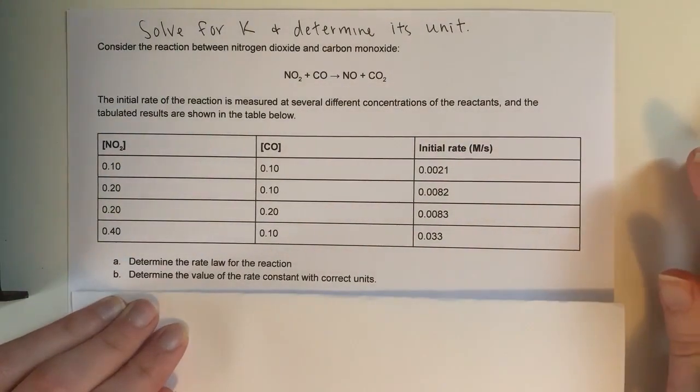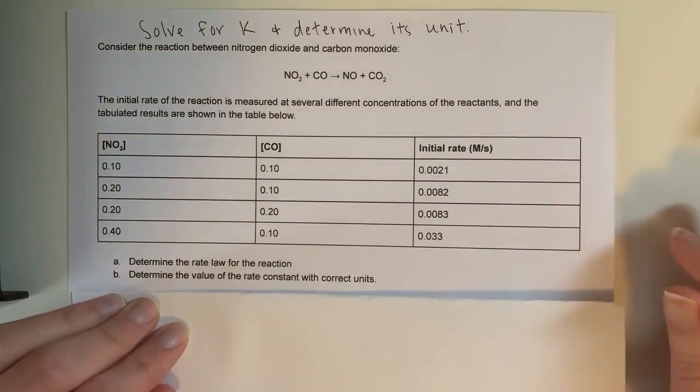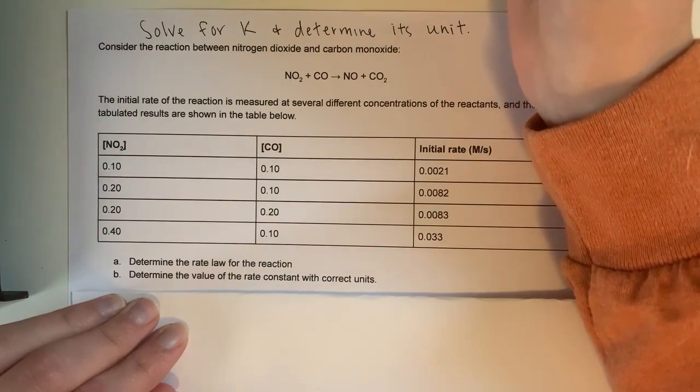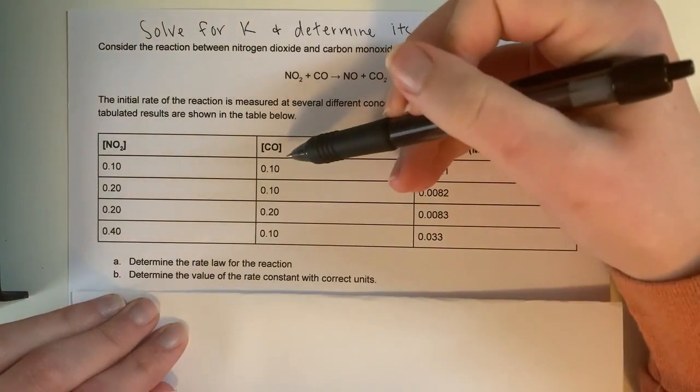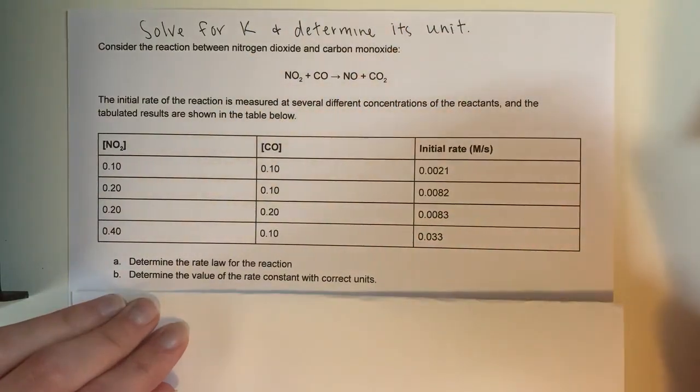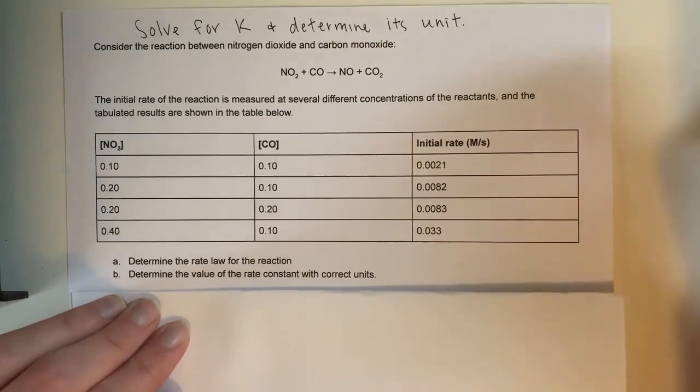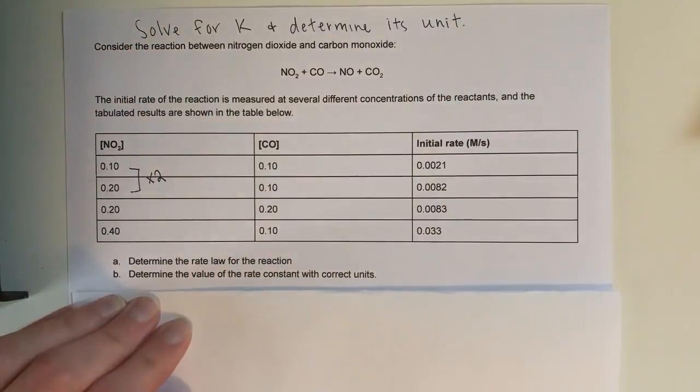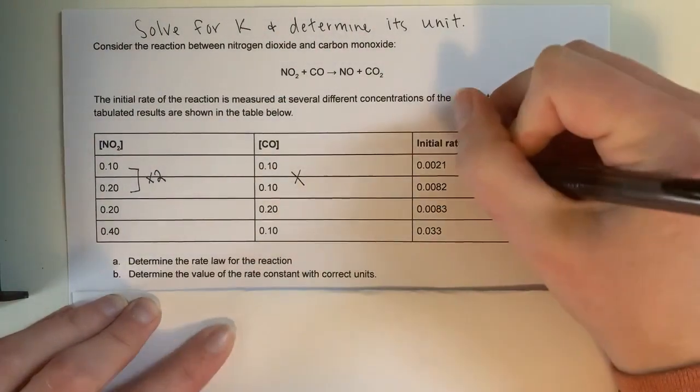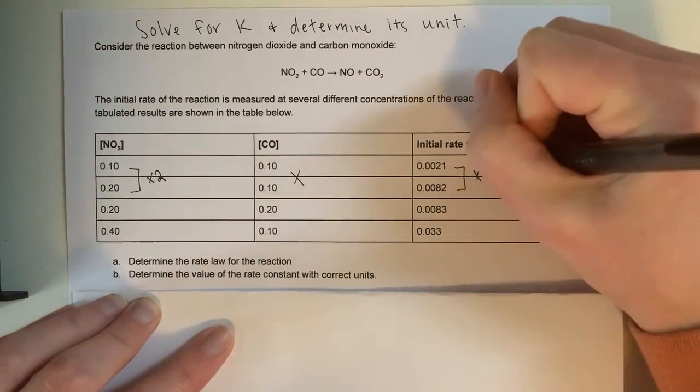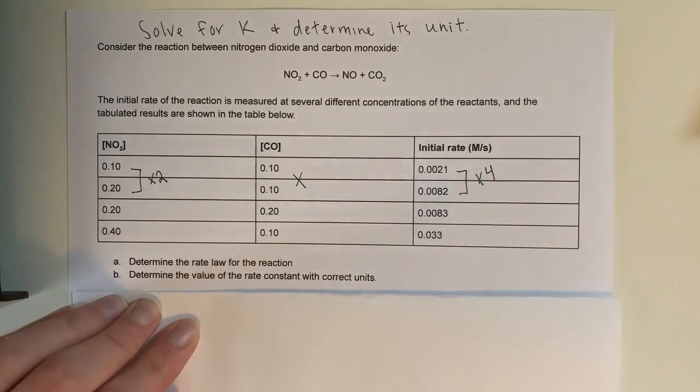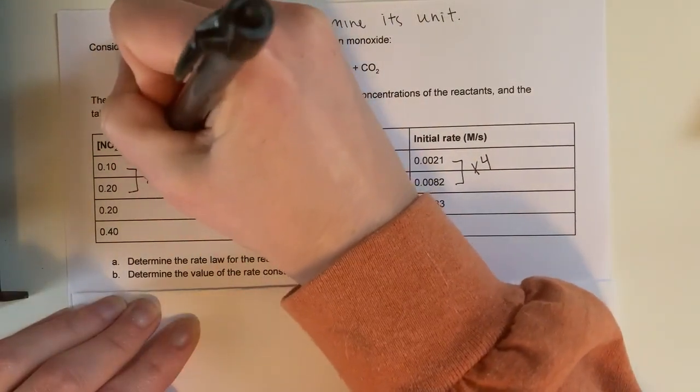When I'm trying to figure out the rate law, I want to isolate a variable here. So I'm going to focus first on NO2. I want to look at two trials where NO2 changes, but CO doesn't change, to isolate that any change in rate would have been due to NO2. So these first trials look like a good set. Because when I double my NO2 concentration, my CO concentration has no change, and my rate looks like it has multiplied by 4. So because when this doubled, this multiplied by 4, I know that the order due to NO2 is second order.